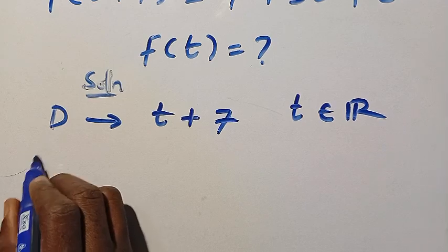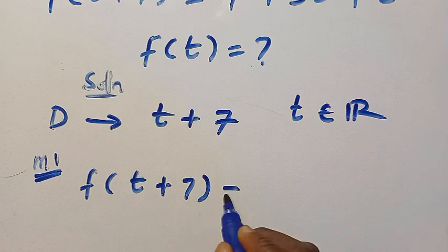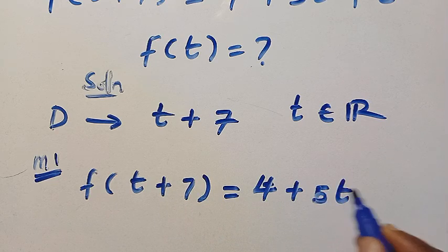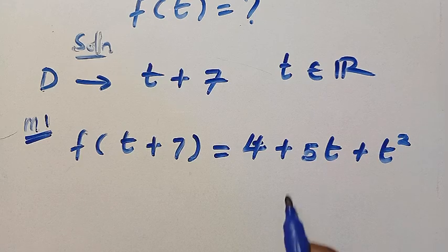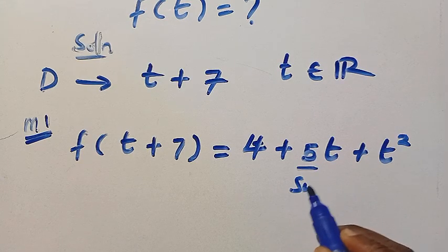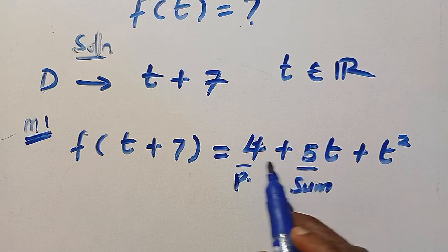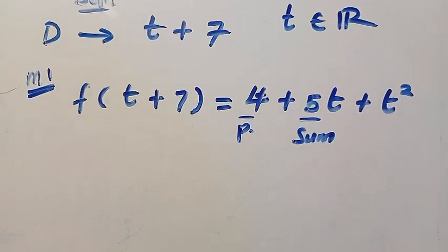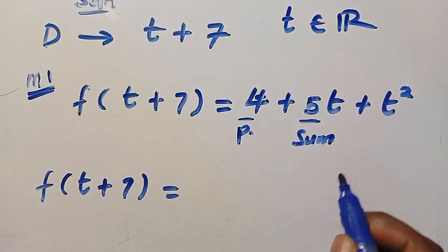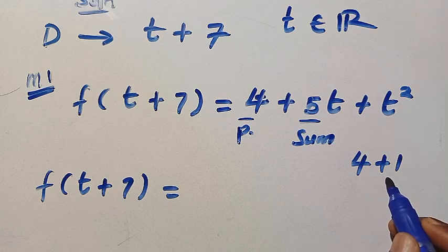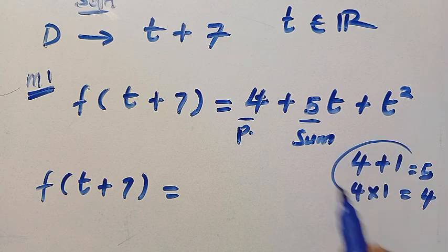By considering the first method, let's call this method 1. Given that f of t plus 7 equals 4 plus 5t plus t squared, we have to factorize this. We look for two numbers that sum to 5 and have a product of 4. So if we choose 4 plus 1, 4 plus 1 equals 5, and 4 multiplied by 1 equals 4.